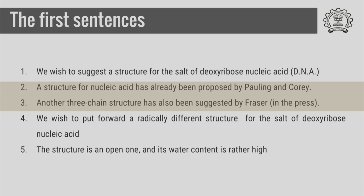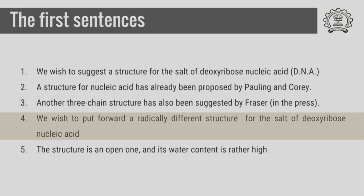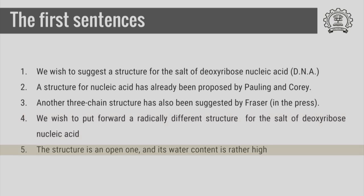So one is Pauling and Corey's suggestion, which is probably a three-chain structure. And then another three-chain structure suggested by Fraser. Then there is a sentence which says what it is that they are actually trying to do: we wish to put forward a radically different structure for the salt of deoxyribose nucleic acid. And then the next paragraph starts with how their structure is — the structure is an open one and its water content is rather high.